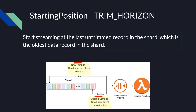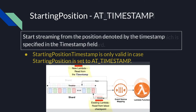Setting starting position to trim horizon will start streaming at the last untrimmed record in the shard, which is the oldest data record. For a new Lambda, it will read all records available in the stream; for an existing Lambda, it will read from the last checkpoint. Setting starting position to at timestamp will start streaming from the position denoted by the timestamp specified in the timestamp field. The starting position timestamp field is only valid when starting position is set to at timestamp.